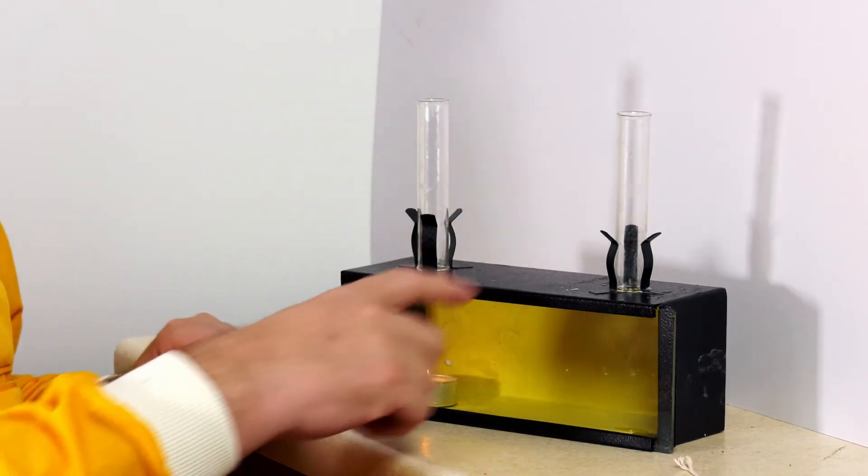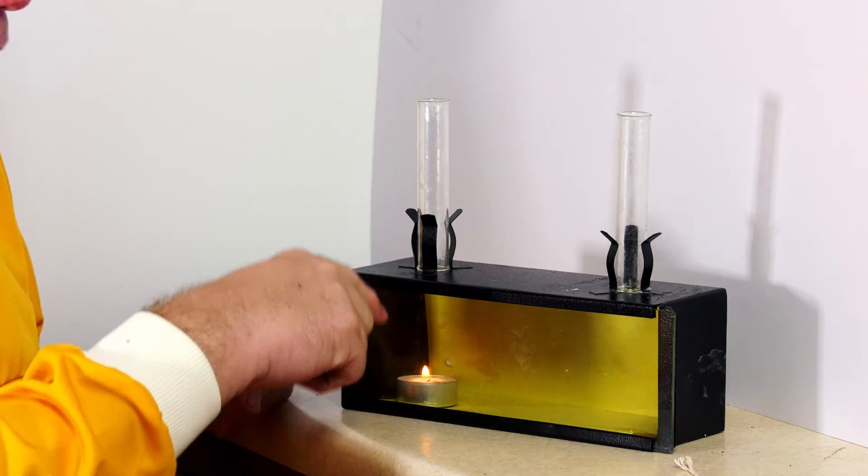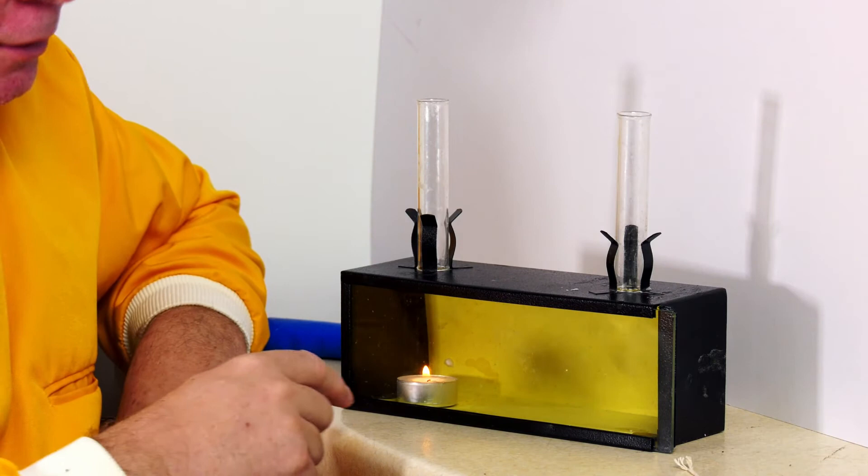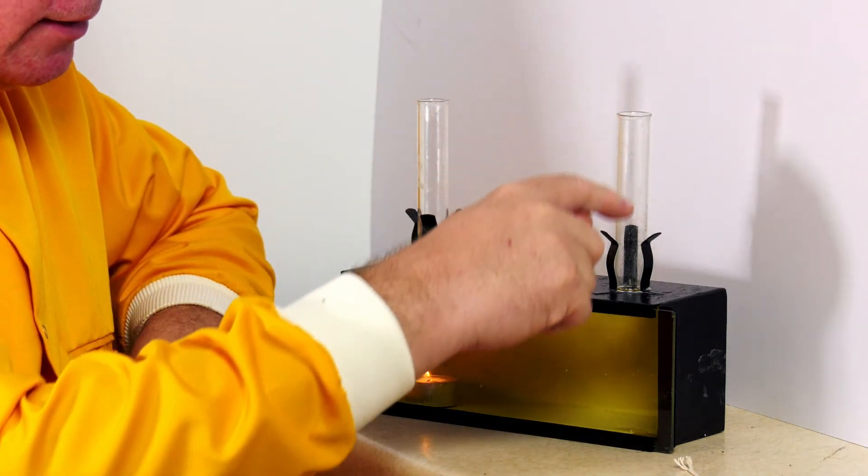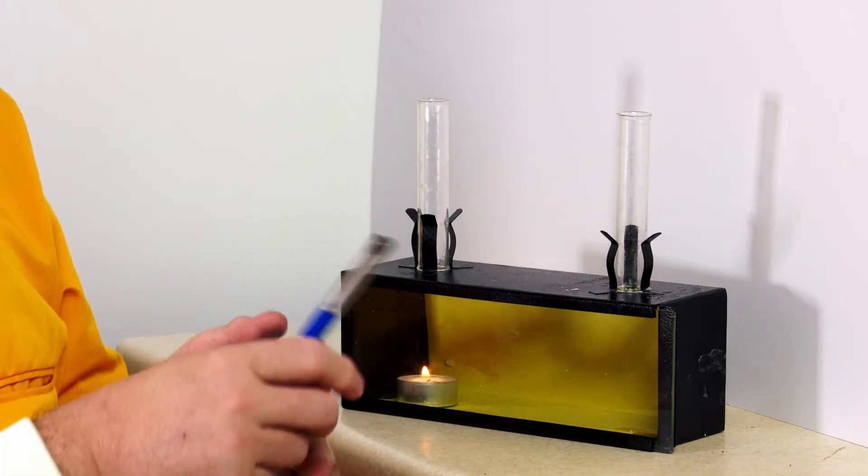We're going to close the box off so that air has to circulate. Air being warmed here rises up through this tube and needs to be replaced by air coming down this tube. To make this visible I'm going to make a little bit of smoke.